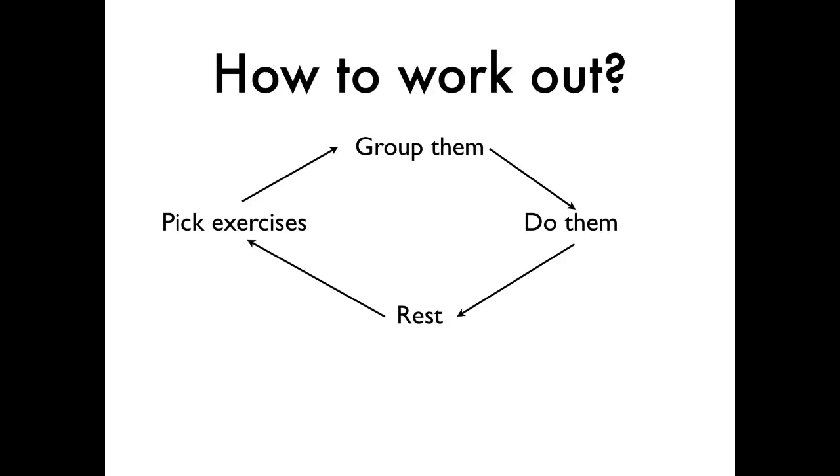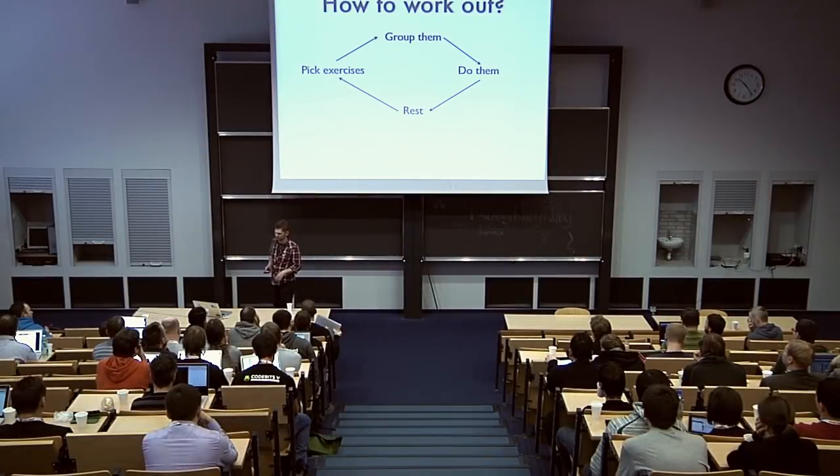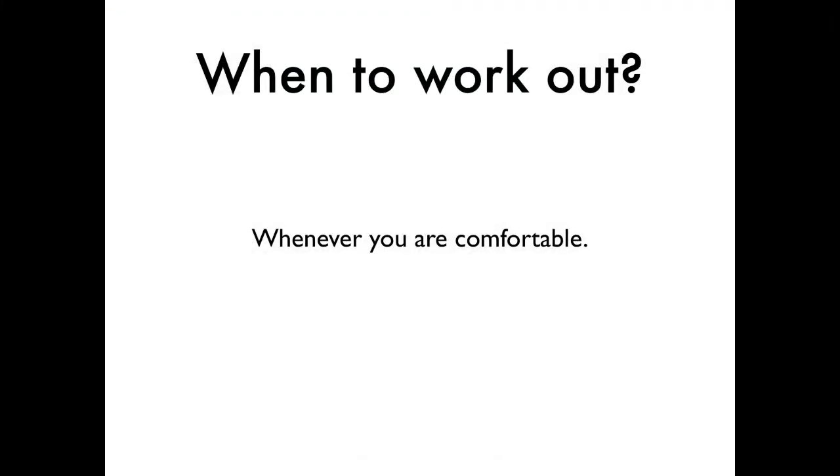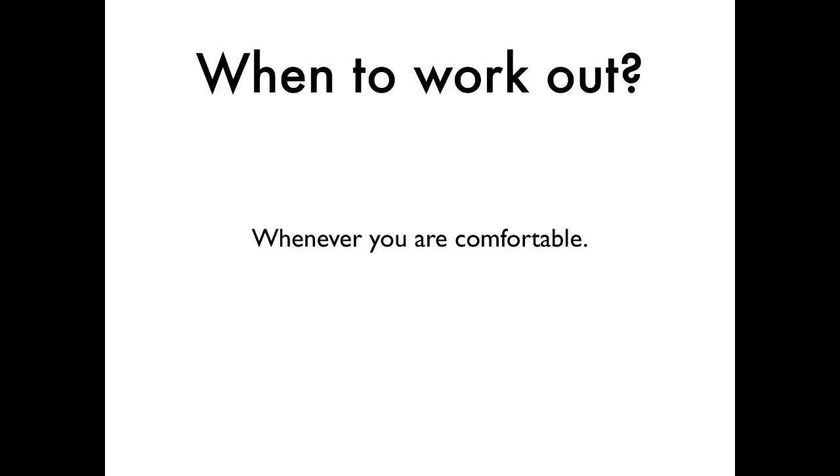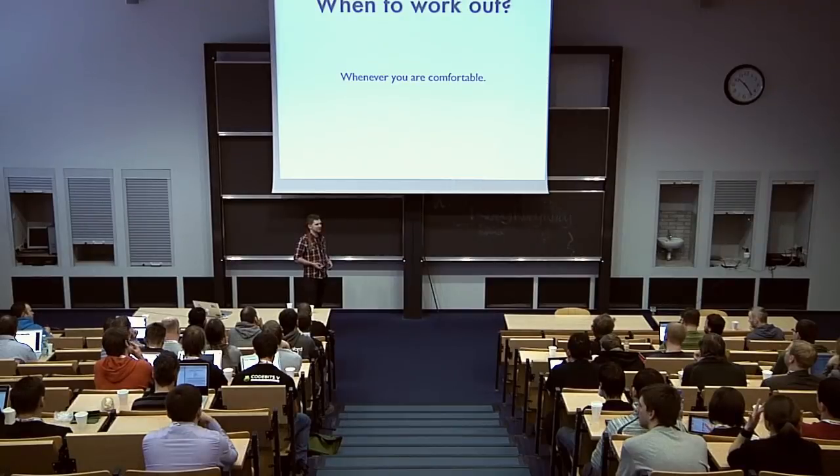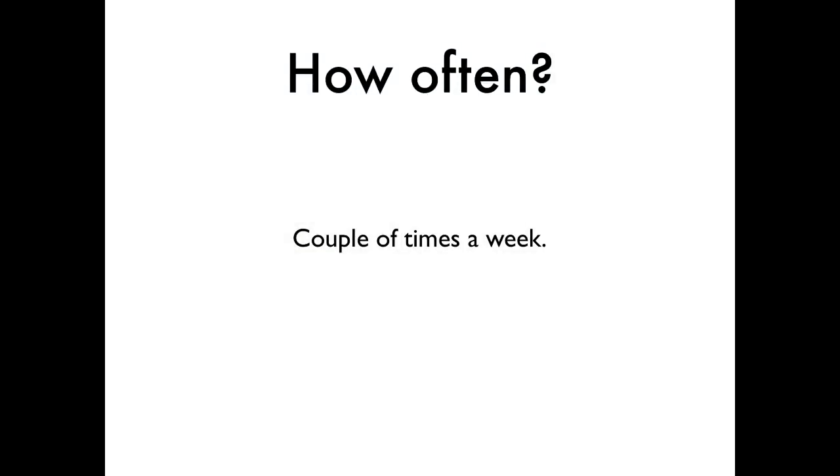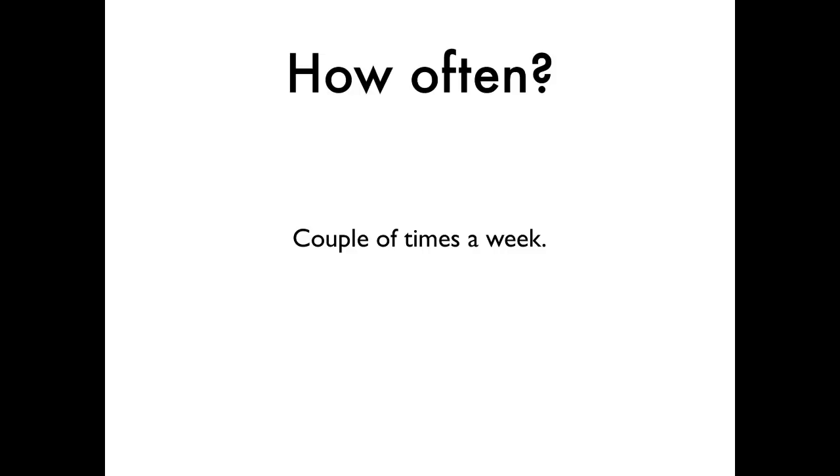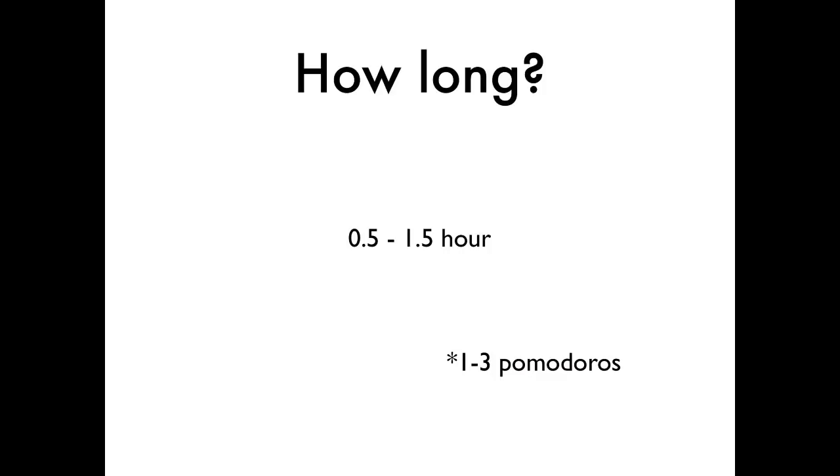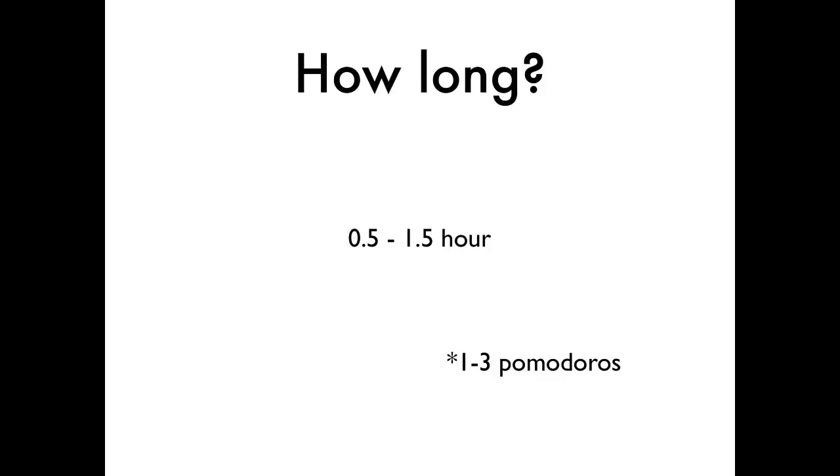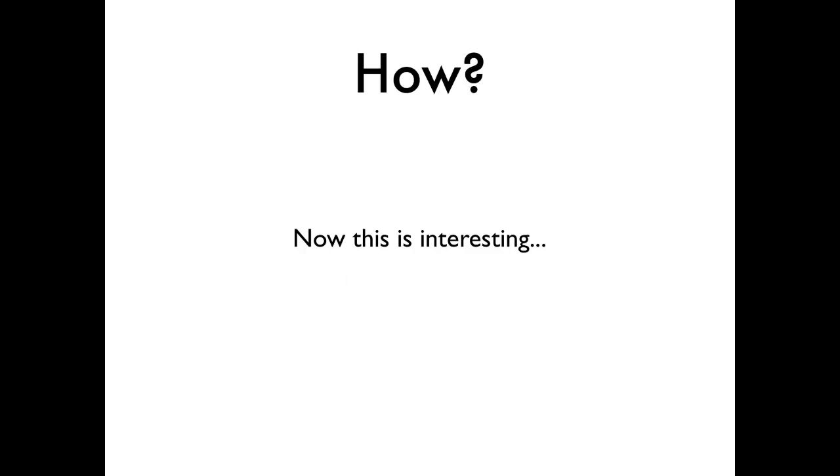So how to work out? Well, it's pretty simple. You pick some exercises, you group them, you do them, and then you rest. And then you just do it over again. So when to work out? Whenever you're comfortable. If you're a morning person, wake up, do some workout, or do some workout after work. Pick some part of the day that works for you. How often to work out? Well, a couple of times a week. And that's enough. How long? From half to one and a half hour. Like it's one to three Pomodoros, if you know what I mean.